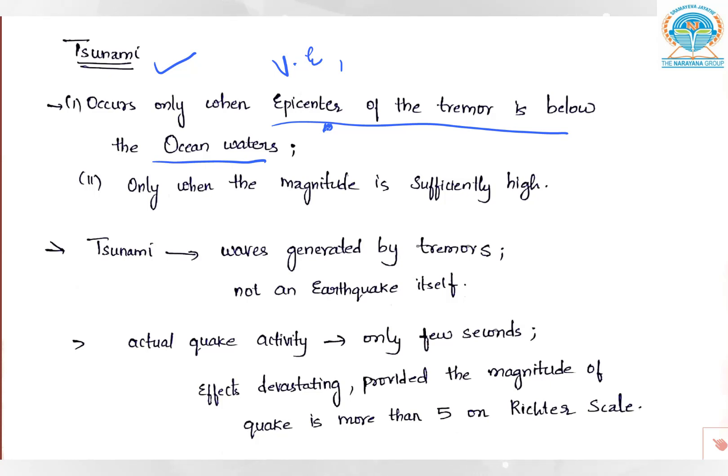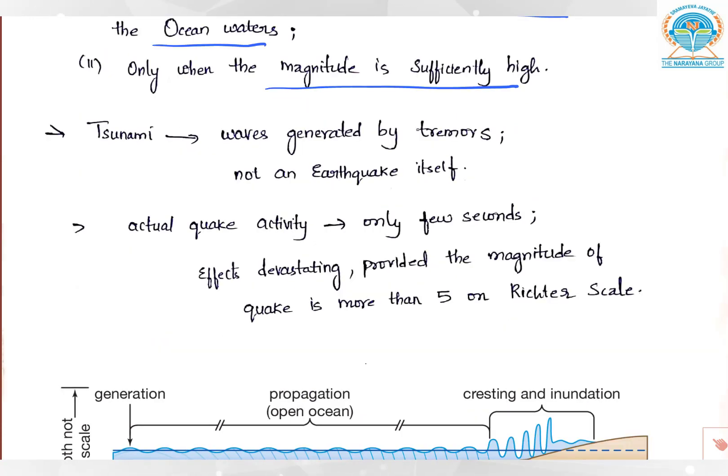It results in the formation of tsunami, and the magnitude should be sufficiently very high when compared to magnitude on land. The tsunami is caused not just by the earthquake only, but after the quake there will be minor tremors and energy release, and because of those tremors the tsunami will be caused.